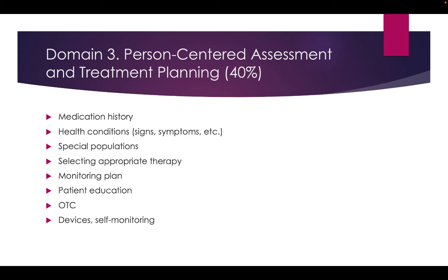What's involved in domain three: medication history, health conditions, signs, symptoms, increased risk for certain conditions based upon patient factors, and special populations. I'm thinking geriatrics, pediatrics, pregnancy, and lactation could certainly come into play here. Selecting appropriate therapy given the situation — whether it's an elderly patient versus a 20-year-old or a pregnant patient versus a 40-year-old male — making sure therapy is appropriate based upon the specific situation. Then monitoring plans, patient education, OTC medications, herbal medications, and devices and self-monitoring.